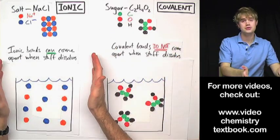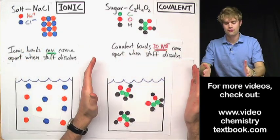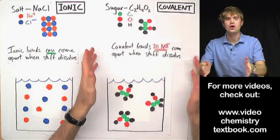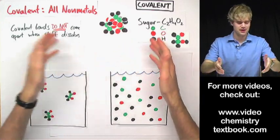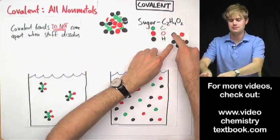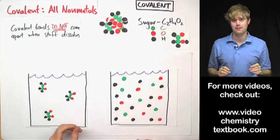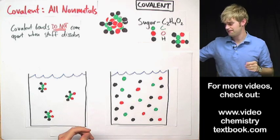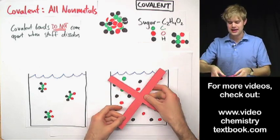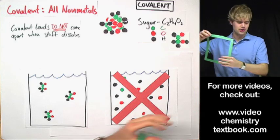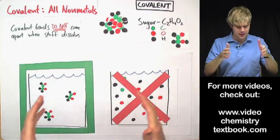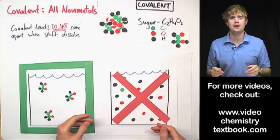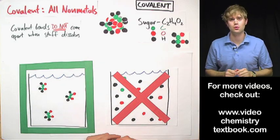So we've got ionic bonds coming apart. We've got covalent bonds sticking together when things dissolve. So something's made of all nonmetals like sugar, it's covalent, and it means that these bonds between atoms are not going to come apart when it dissolves in water. So you are not going to get individual atoms like this, instead you're going to get entire molecules floating around in the water. And that's what it looks like when covalent compounds like sugar dissolve in water. So thanks a lot.